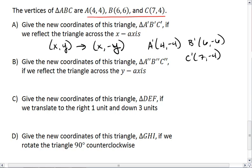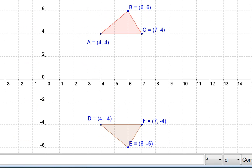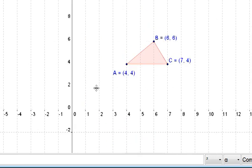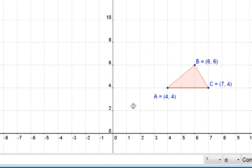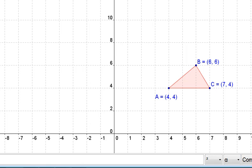For part B, we now want to reflect this triangle across the y-axis. Which means if A is 4, 4, then its reflection is going to be negative 4, 4.